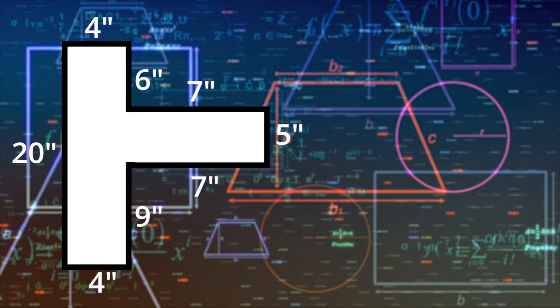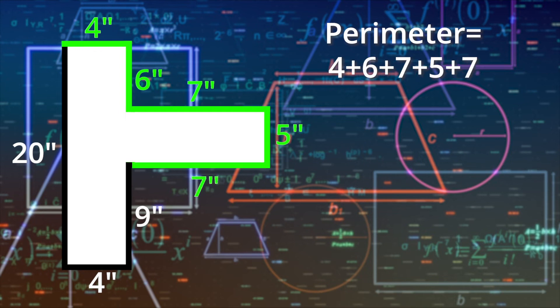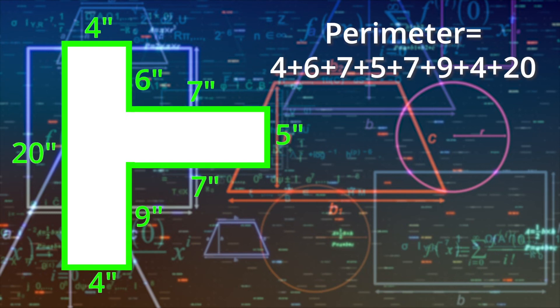But what about the perimeter? As you recall, we need to measure the outside of the figure. Watch as we trace the outline of the entire figure and add the lengths and widths together as we go. So, 4 plus 6 plus 7 plus 5 plus 7 plus 9 plus 4 plus 20 equals 62. So, our perimeter is 62 inches.